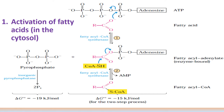This first step of beta oxidation — activation of fatty acid in the cytosol — is catalyzed by fatty acyl-CoA synthetase. Fatty acid activation occurs in two steps. In the first step, the carboxylate ion displaces the outer two phosphates (beta and gamma) of ATP to form a fatty acyl-adenylate, a mixed anhydride of a carboxylic acid and phosphoric acid. The other product is inorganic pyrophosphate.